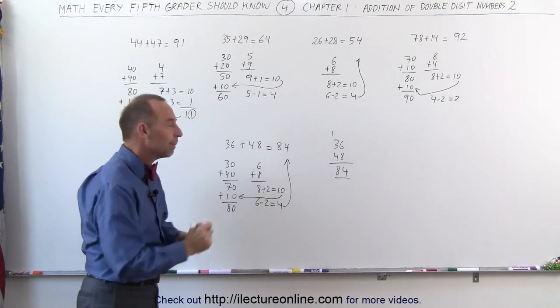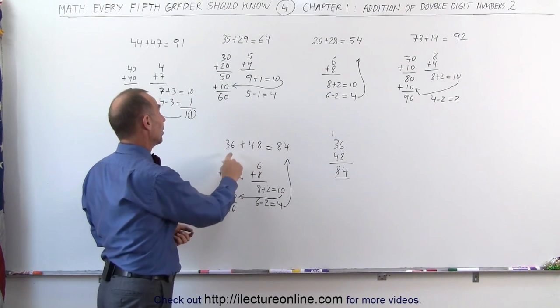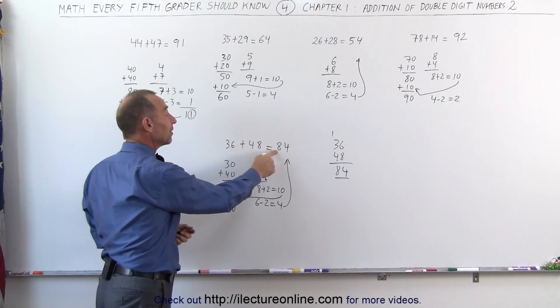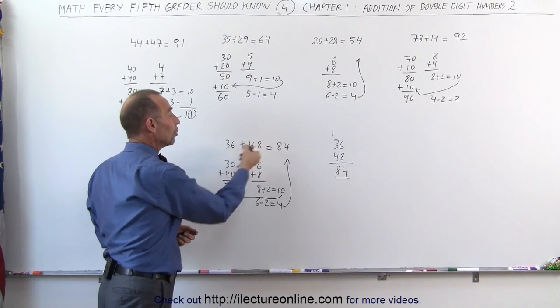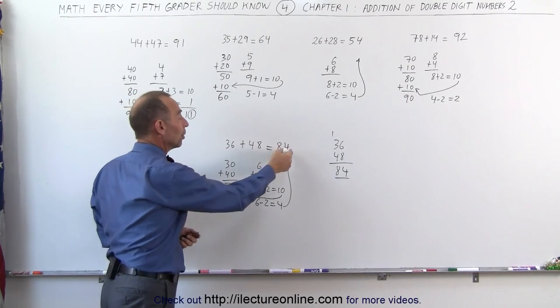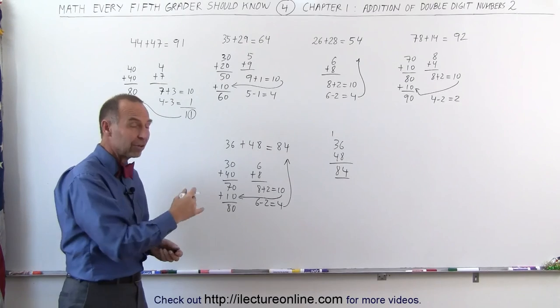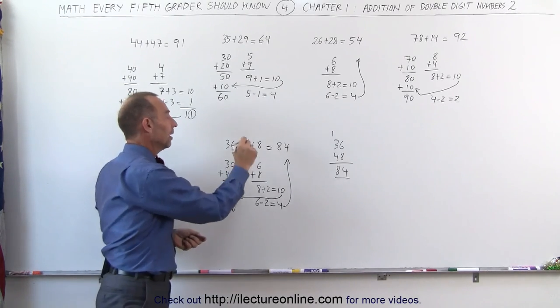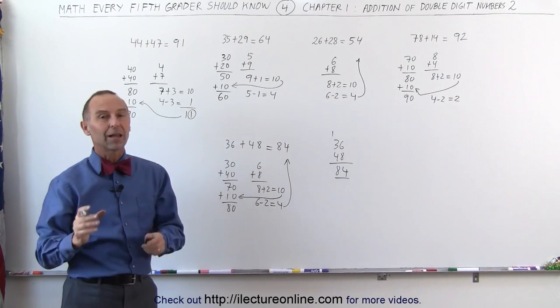However, you can do this very quickly in your head. You can say 30 plus 40 is 70. But those two together add up to more than 10, that makes 80. Write down the 8. 6 plus 8 is 14. You already used the 10, you're left with 4. You put a 4 there. And very quickly, over time, as you practice, you can do this quickly without having to write anything down. You just look at the number and you write down the answer. And once you can do that, you can do math like this a lot faster.